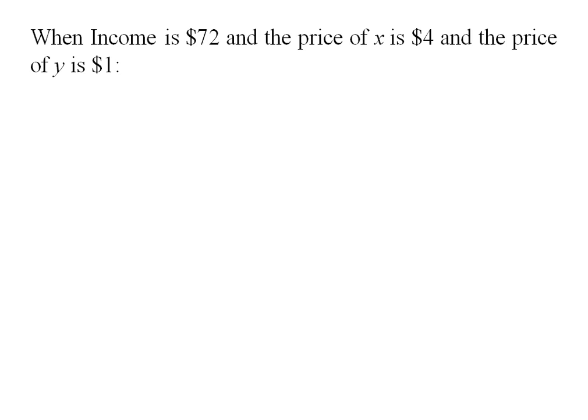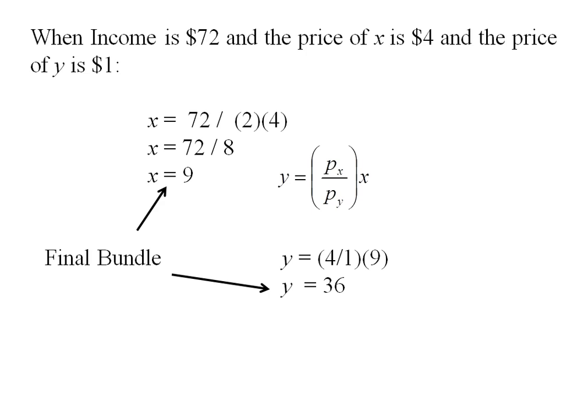My final bundle: x is 4 dollars and income and price of y don't change. Plugging in those values I get x is 9 and y is 36. So my final bundle has 9 units of x and 36 units of y.